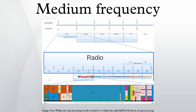Medium frequency is the ITU designation for radio frequencies in the range of 300 kHz to 3 MHz. Part of this band is the medium wave AM broadcast band.